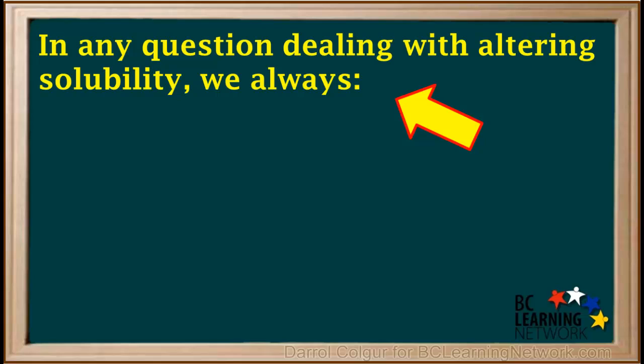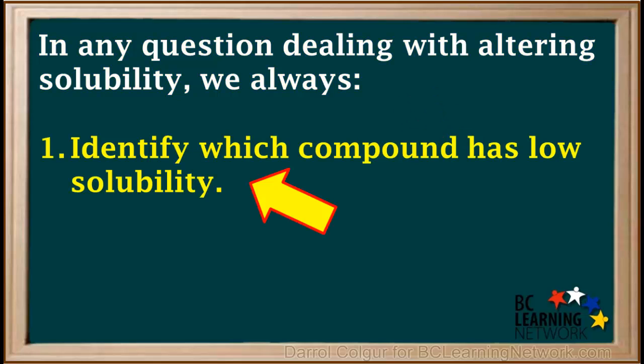In any question dealing with altering solubility, we always start with two important things. First, we identify which compound has low solubility. We do this by consulting the solubility table or the Ksp table.